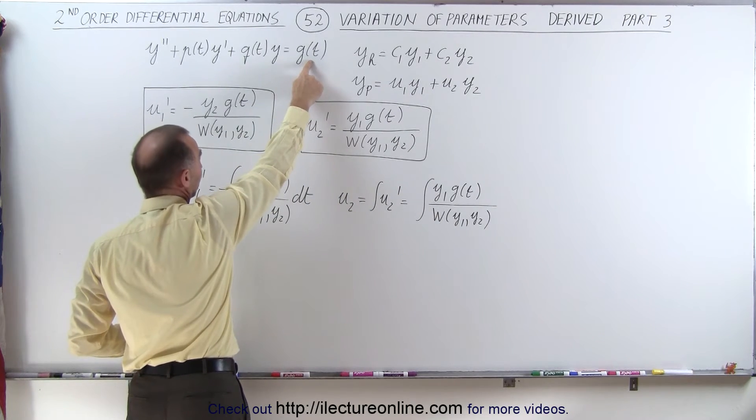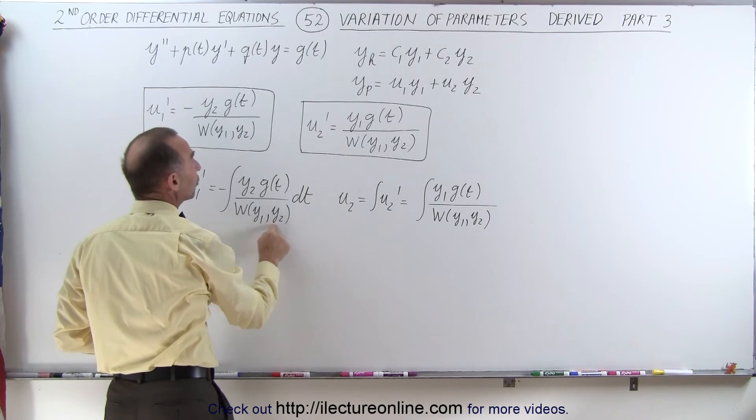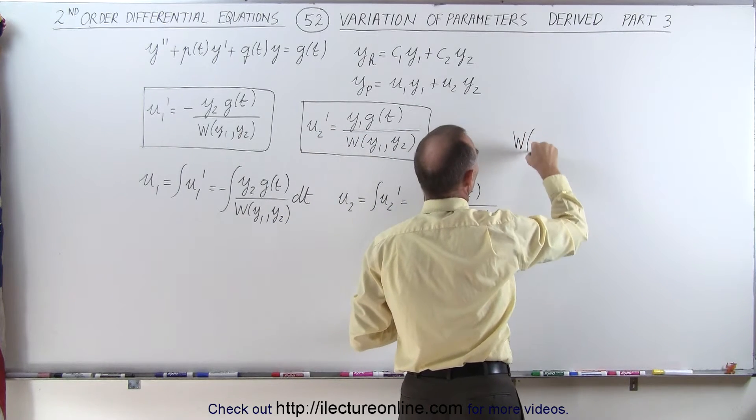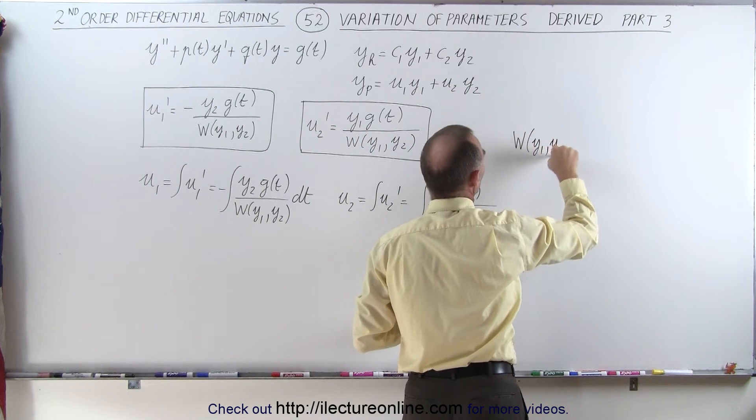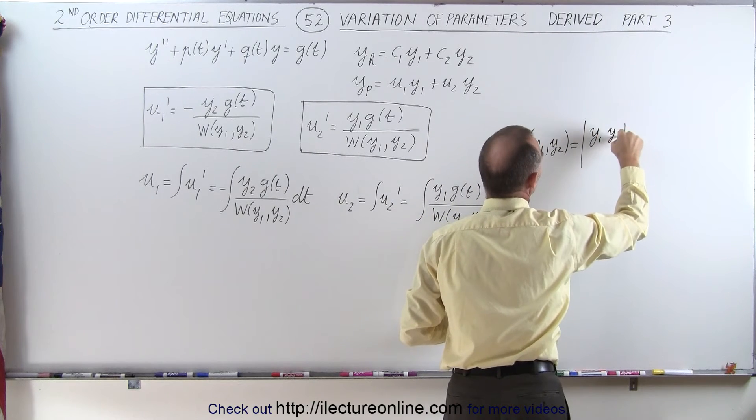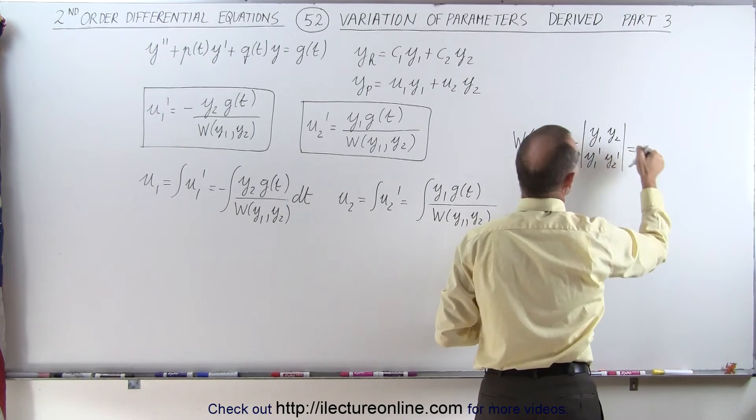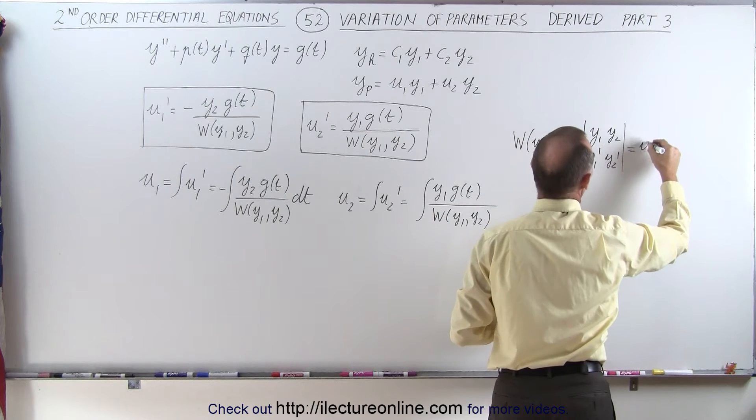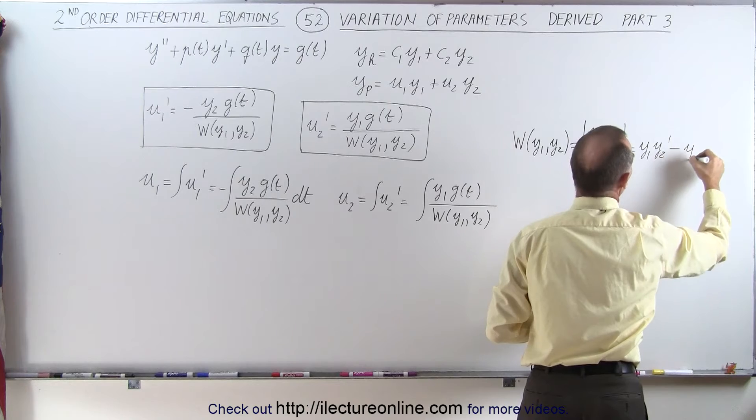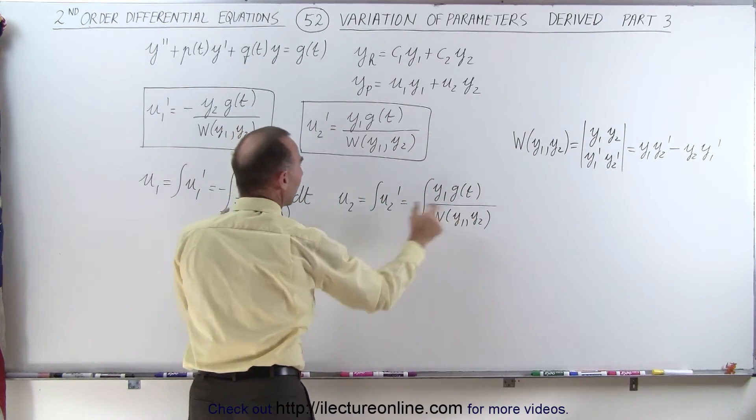g(t) is simply the equation on the right side of the equal sign, and the Wronskian can be found by taking y1 and y2 from the homogeneous equation. The Wronskian of y1 and y2 is equal to the determinant of y1 and y2 in the first row, and y1 prime and y2 prime in the second row, which means it's the product of those two terms, y1 times y2 prime minus the product of those two, which is y2 times y1 prime. That will then go into each of the two denominators.